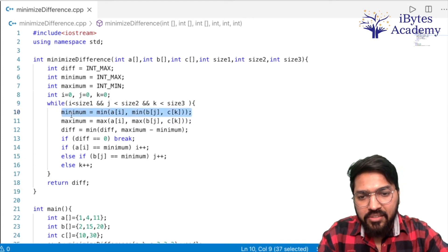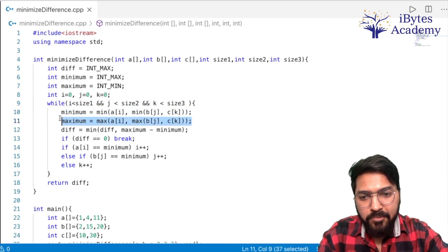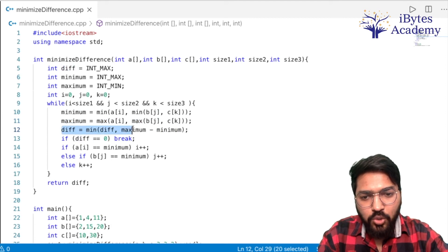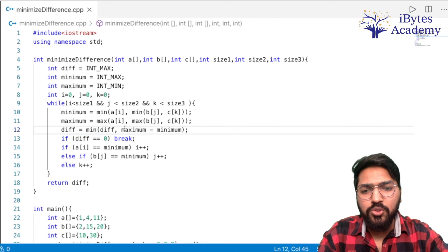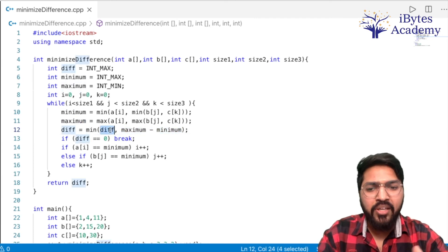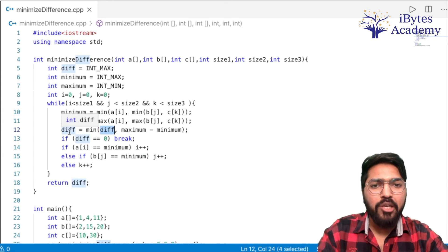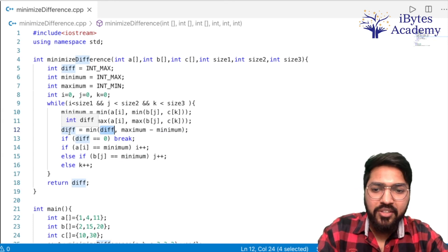Current triplet's minimum will come. And current triplet's maximum will come. Difference equals minimum of difference and maximum minus minimum. So whatever value comes for our current triplet, we compare it with difference to decide whether to update the diff variable or not.